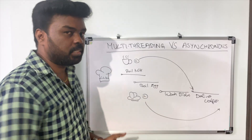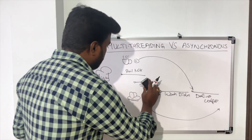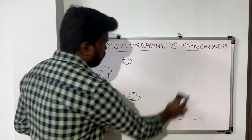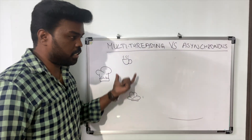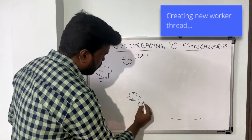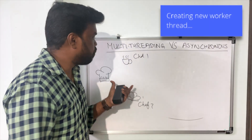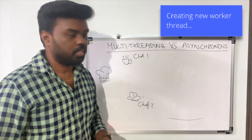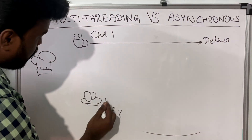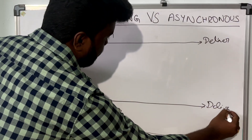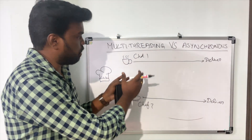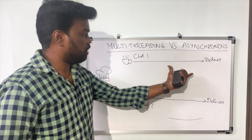Now let's look at the same example for multi-threaded programming. In the case of multi-threaded programming, the series of activities will be a little bit different. When the chef receives two orders — to make a coffee and to make a boiled egg — the chef goes ahead and hires two additional chefs: Chef One and Chef Two. Chef One will make the coffee and deliver it to the customer, and Chef Two will make the boiled egg and deliver it to the customer. The primary chef's responsibility is to provide the required resources to Chef One and Chef Two so they can accomplish the tasks successfully.